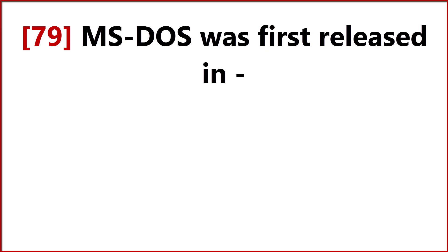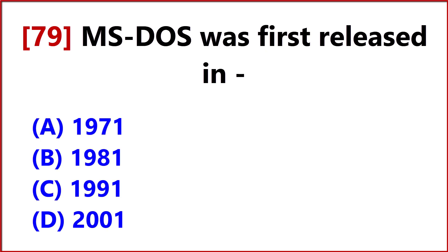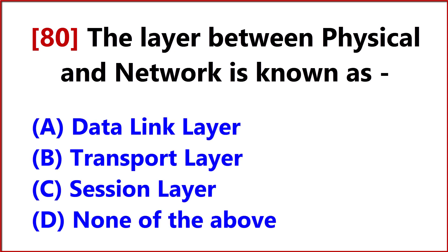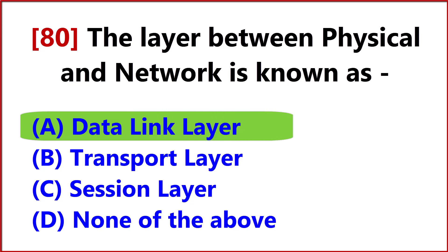MS-DOS was first released in Answer, Option B, 1981. The layer between physical and network is known as Answer, Option A, Data Link Layer.